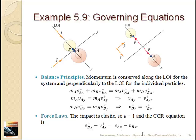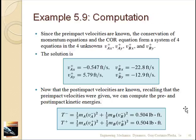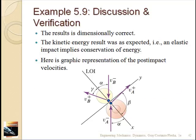This is assumed to be an elastic collision (e = 1). We resolve the initial velocities into x and y components, solve the equations, and find the final velocities. The kinetic energy before and after is conserved, which is typical of an elastic collision. Graphically, the mallet scatters one way and the puck scatters in the other direction.